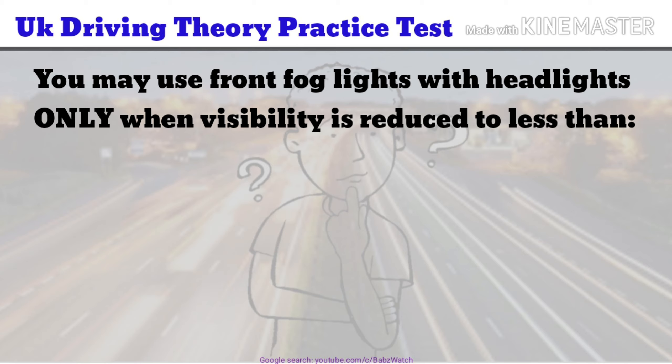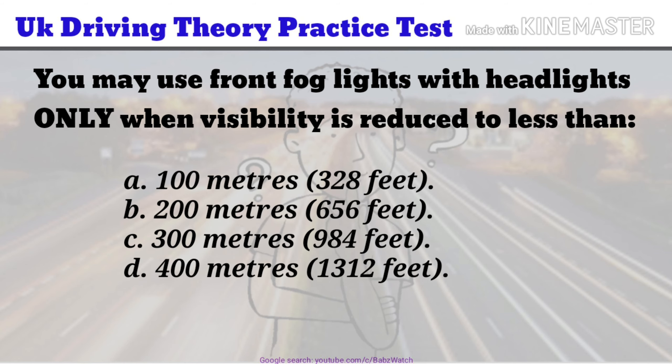UK Driving Theory Practice Test Question 11 of 50. You may use front fog lights with headlights only when visibility is reduced to less than: a. 100 metres. b. 200 metres. c. 300 metres. d. 400 metres. The correct answer is a. 100 metres.